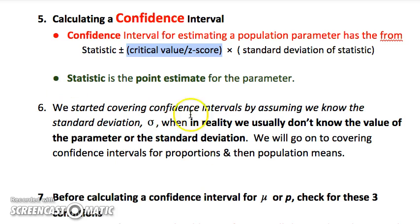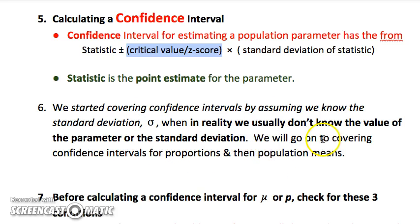Now, when we started looking at this, we assumed we knew the standard deviation of the population. In reality we don't know the parameter or the standard deviation. So we're going to look at how this changes the normal condition for proportions, and then how it really changes things for sample means.